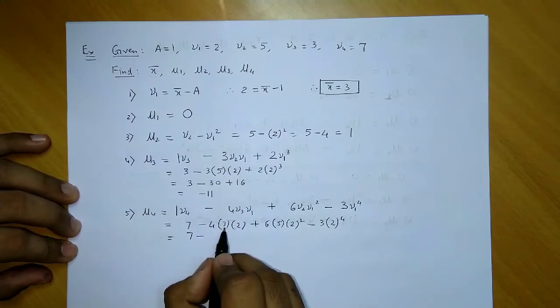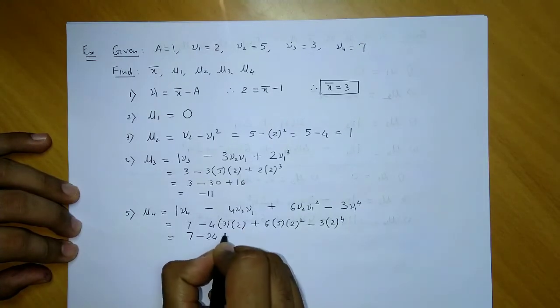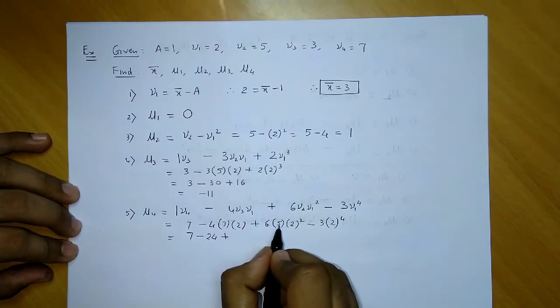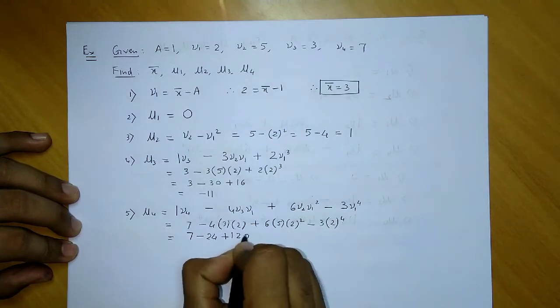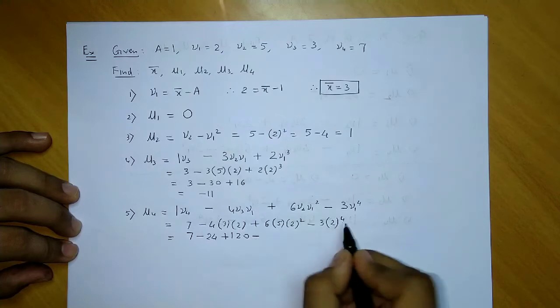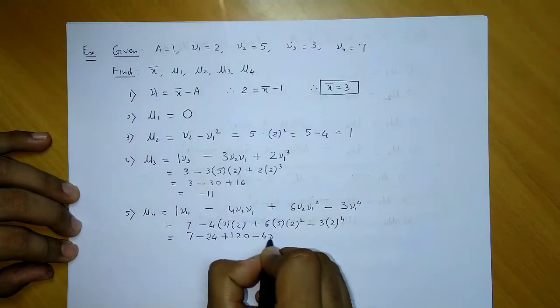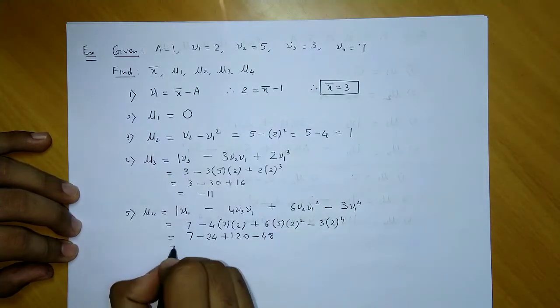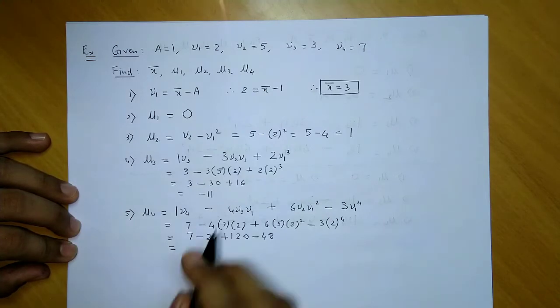If you proceed further: 7 - 4(3)(2) + 6(5)(4) - 3(16) = 7 - 24 + 120 - 48.